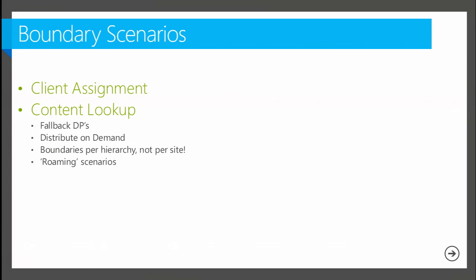Now to the fun stuff — boundary scenarios. I want to go through and show you how boundaries are used in your environment. The reason I want to go through this is to show you from a troubleshooting perspective how boundaries can sometimes impact you. So first I want to take you through client assignment — I won't spend much time there, more just to highlight a couple of things in the log. Then I want to take you through a few scenarios. The first scenario is fallback DPs. I'll define what they are. There's the first scenario, which is the default, where we're in a protected DP scenario — clients on a given boundary communicating with DPs in their boundary group, staying in the default config.